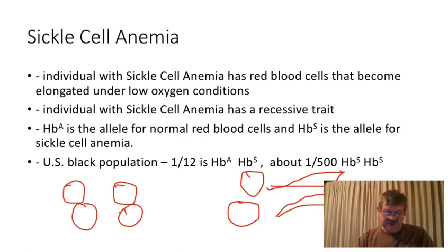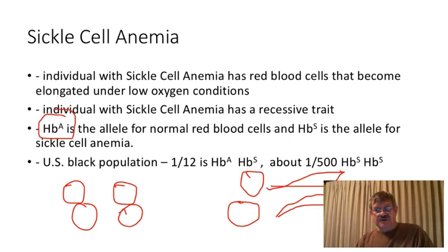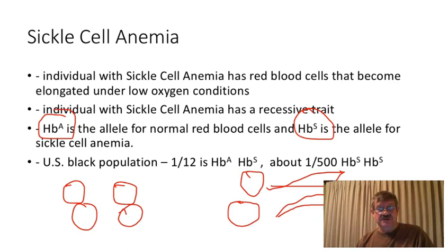There are standardized symbols for the alleles. The allele for normal red blood cells is HbA — HB for hemoglobin, superscript A. The allele for sickle cell is HbS. HB again refers to hemoglobin, the protein affected in the red blood cells.